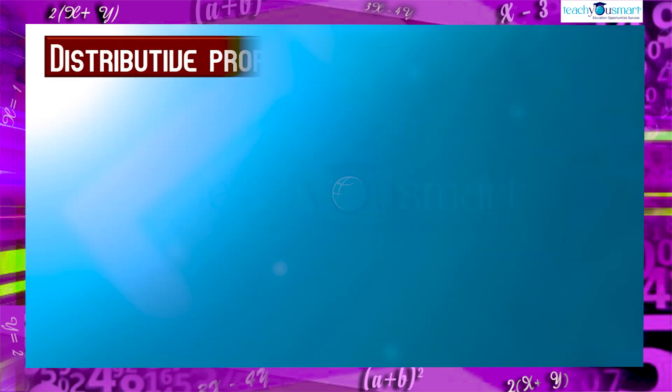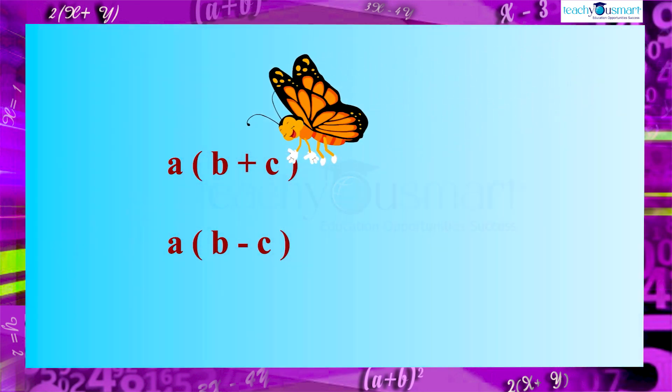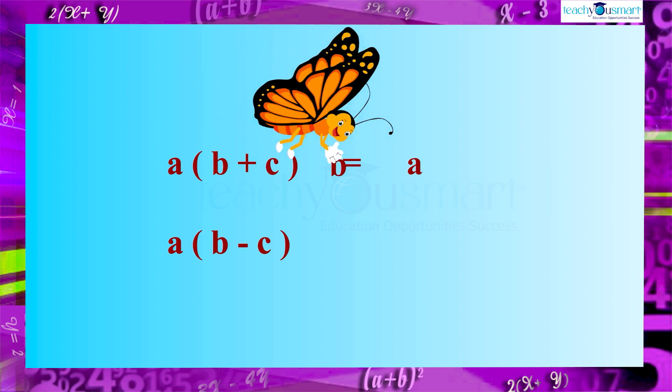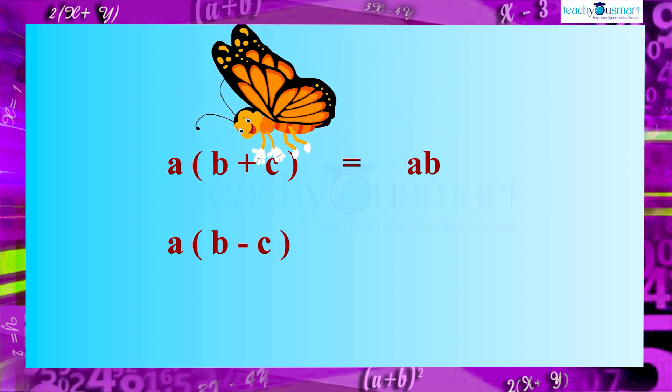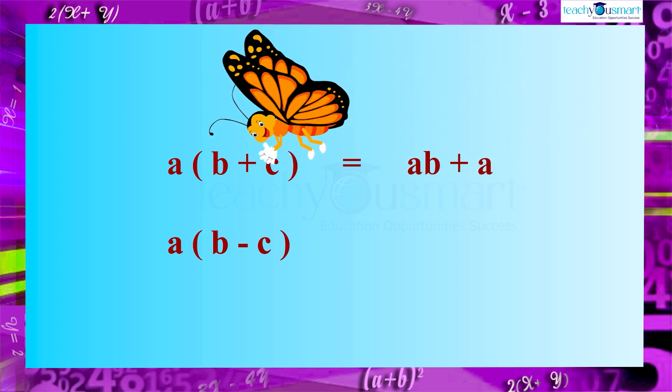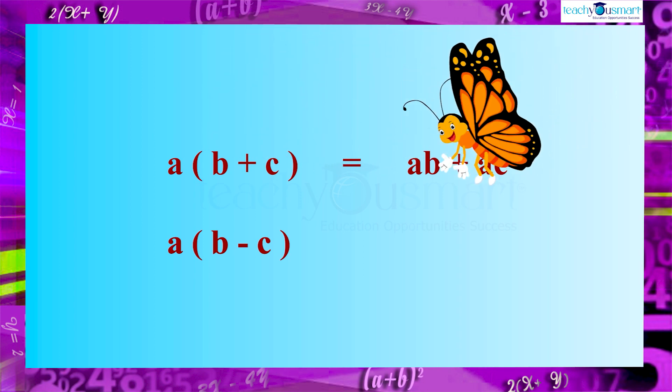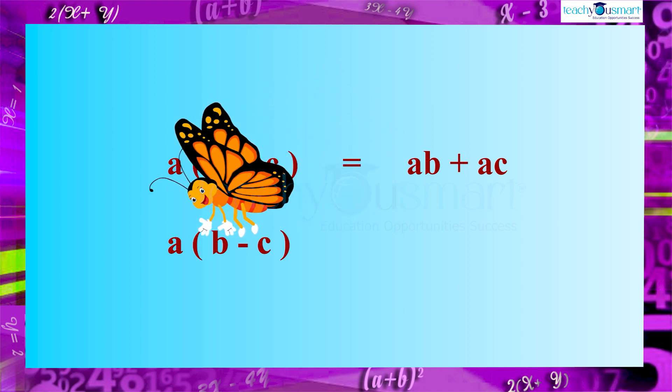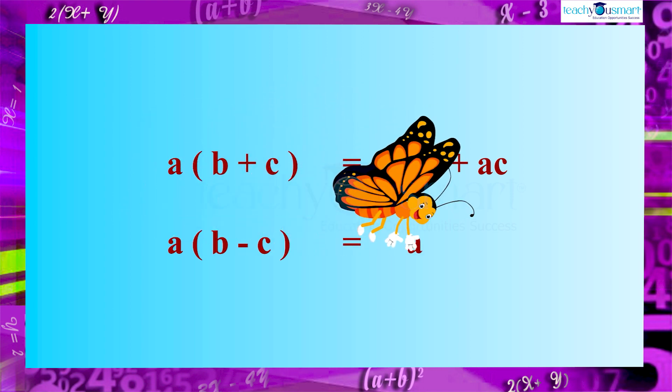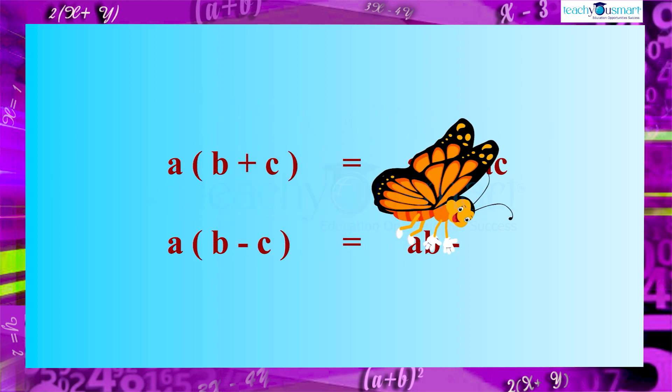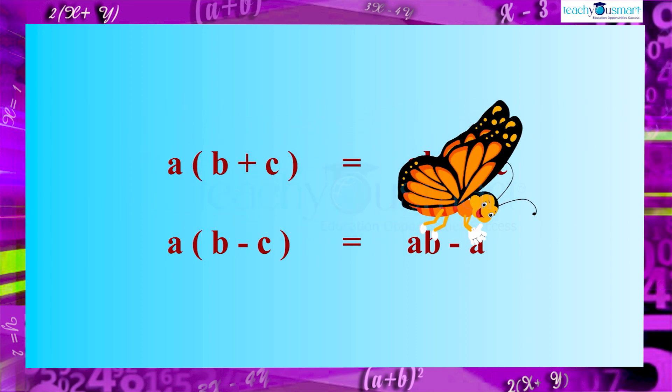In this, we commonly use the distributive property. That is, a multiplied by b plus c equals ab plus ac. And a multiplied by b minus c equals ab minus ac.